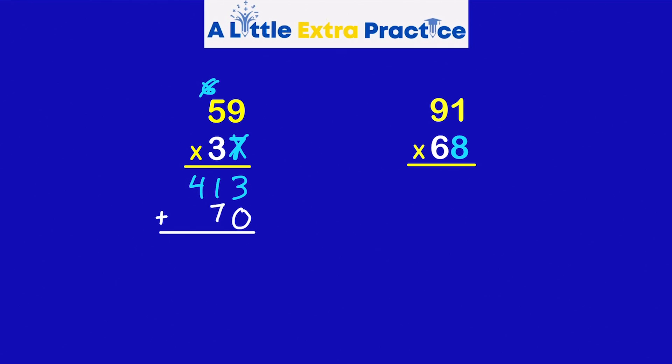And now I can pretend it's just a 3. 3 times 9 is 27. 3 times 5 is 15. Plus 2, 17.